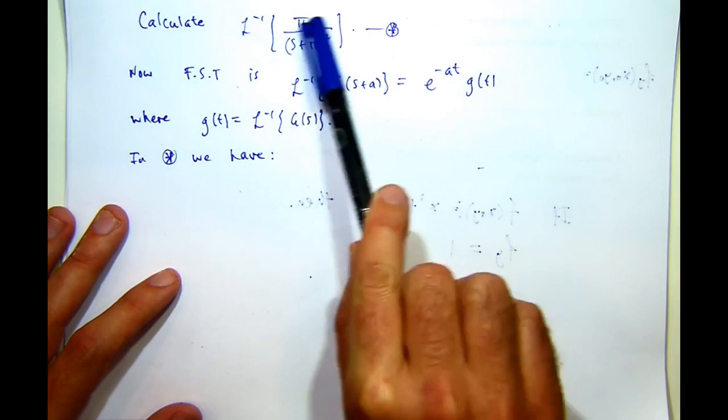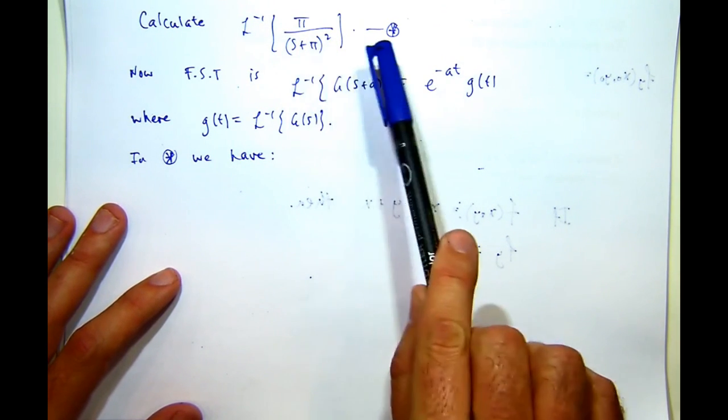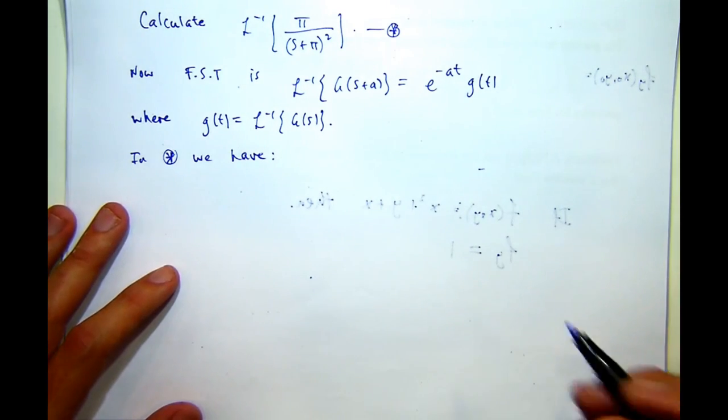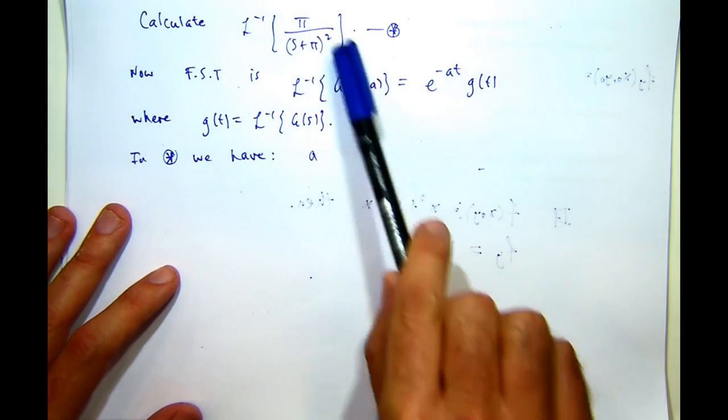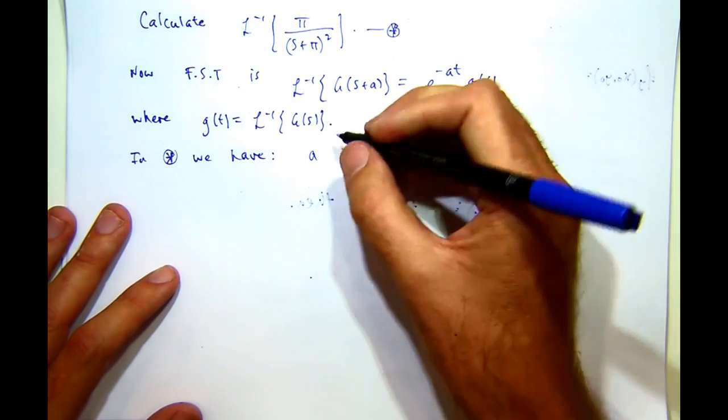So if I look in here, what do you think A is going to be? Just sort of by lining this up, you can see A should equal something like π.